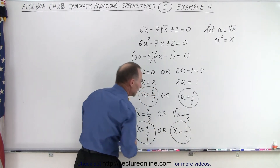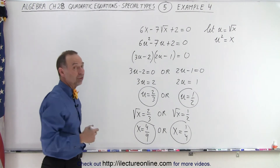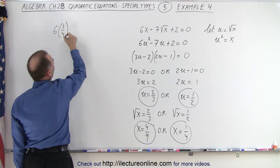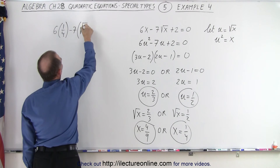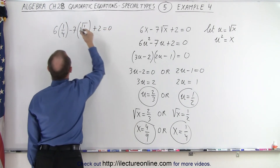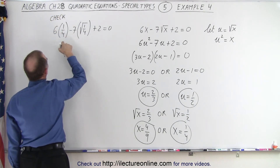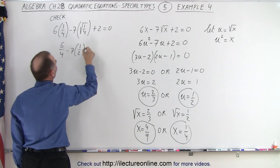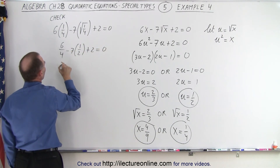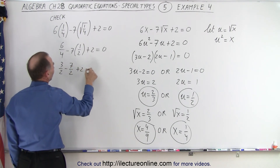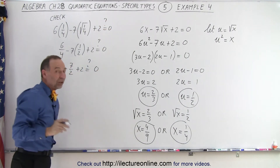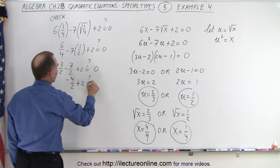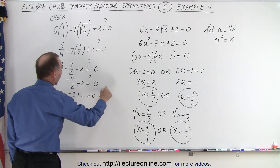You may wonder — are those indeed the right solutions? You can plug them back into the original equation to check. Let's try x equals 1 fourth: 6 times 1 fourth minus 7 times the square root of 1 fourth plus 2 equals 0. This becomes 6 over 4, minus 7 times 1 half, plus 2, which simplifies to 3 halves minus 7 halves plus 2. That is negative 4 halves plus 2, which equals negative 2 plus 2, and that is indeed 0. So it checked out.